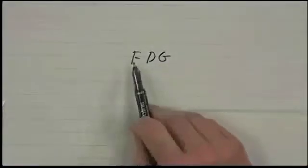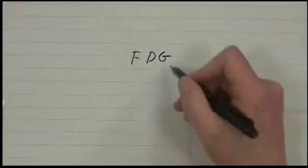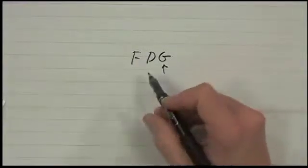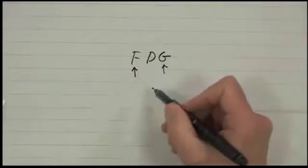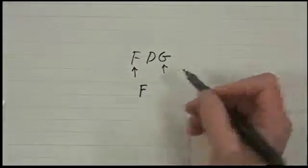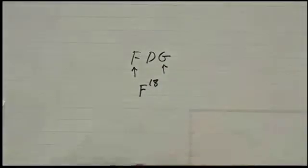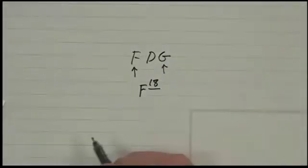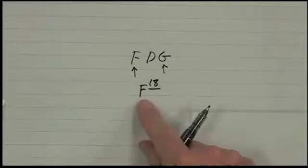FDG, which is fluorine deoxyglucose. It's basically sugar with a fluorine molecule attached, but it's not a normal fluorine molecule. It's F18. So F18 is an isotope of fluorine. It's got a half-life on the order of something like half an hour, 20 minutes or something.